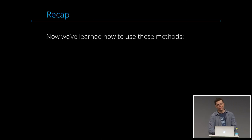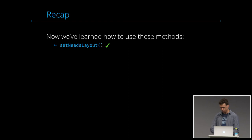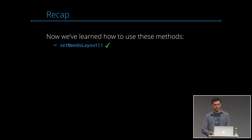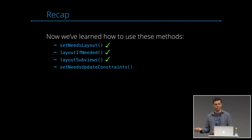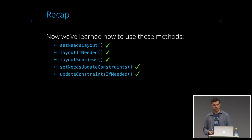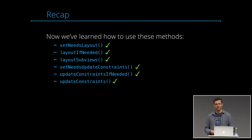So we've now learned how to use all these methods: setNeedsLayout invalidates the current layout and signals that constraints need to be resolved again; layoutIfNeeded triggers a layout pass if the layout is invalid; layoutSubviews transforms the constraints into the frames; setNeedsUpdateConstraints invalidates the constraints; and updateConstraintsIfNeeded calls updateConstraints if the constraints are invalid.